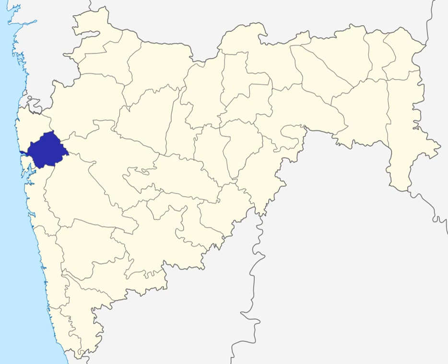After independence, in 1949, the Koli Princely state of Jahar was merged with Thane district and became a separate Taluka. As many as 27 villages and eight towns from Borivali Taluka and one town and one village from Thane Taluka were transferred to the Bombay Suburban district in 1956 when the limits of Greater Bombay were extended northwards in Salsette.